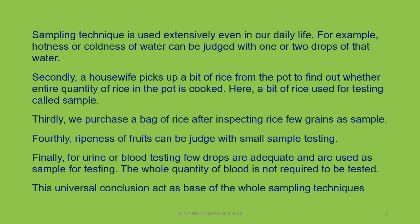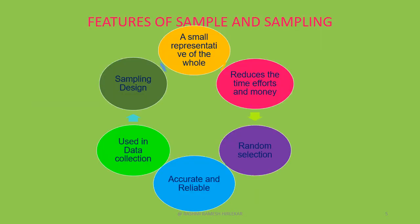This universal conclusion acts as the base of the whole sampling technique. Now, we will discuss the features of sample and sampling. The first feature is that sampling is a small representative of the whole. Sampling is an effective alternative to the census survey.